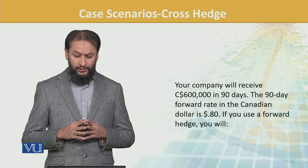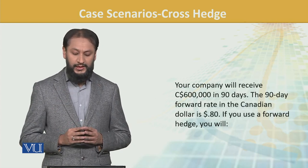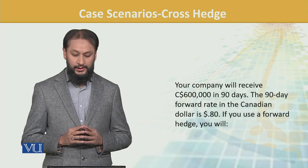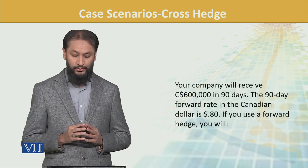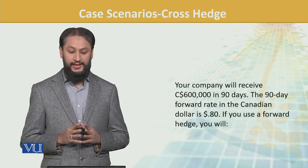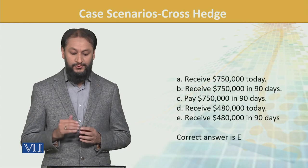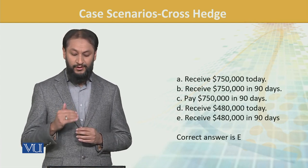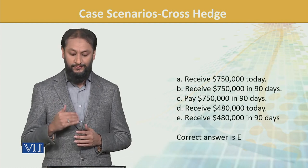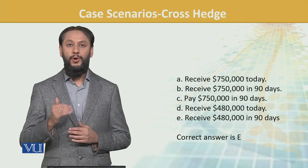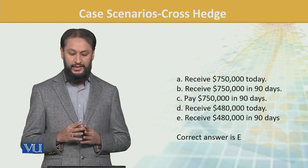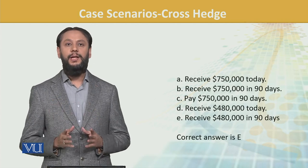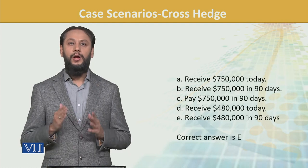Here is another case: your company will receive 600,000 Canadian dollars in 90 days. The 90-day forward contract in Canadian-US dollar is 0.80 dollars. If you use a forward hedge, the options are: receive 750,000 today, receive 750,000 in 90 days, pay 750,000 in 90 days, receive 480,000, or receive 480,000 in 90 days. The correct answer is receive 480,000 in 90 days — because converting 600,000 at the rate of 0.80 gives 480,000, and that will be receivable in 90 days.